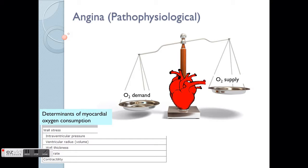Another very important determinant is the heart rate — meaning how fast the heart beats. The faster the heart beats, obviously it needs more energy, which translates to a greater oxygen requirement for the heart itself to function.